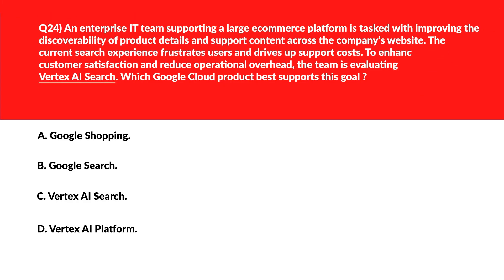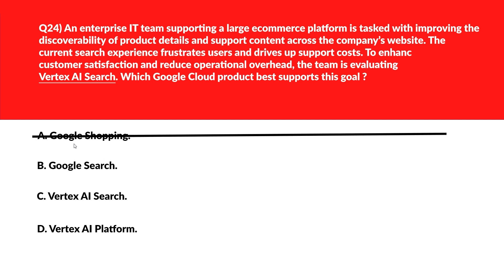Now let's look at this question, which is about Vertex AI Search. Option A says using Google Shopping as a service for surfacing retail listings across external merchant platforms — that's out. Option B says using Google Search as a tool for indexing and retrieving public web content — that won't help in this use case, so it's a wrong answer.